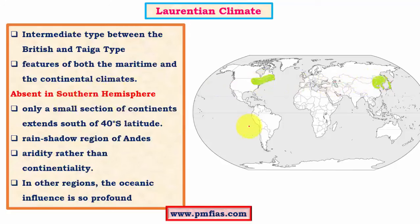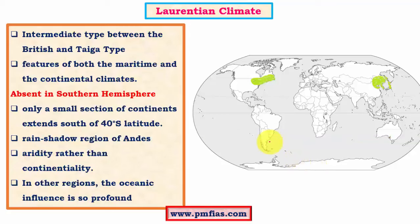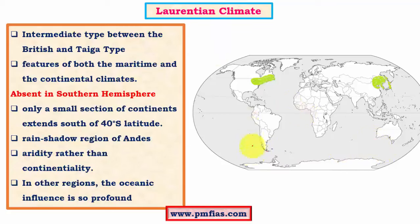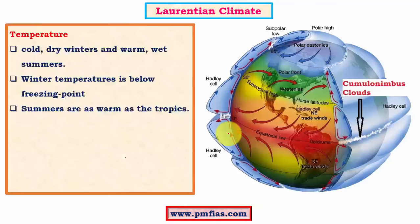The Laurentian type of climate is absent in the southern hemisphere, mainly because of the absence of significant landmass in the temperate region beyond 40 degrees north and south of the equator. The Antarctic falls under polar or tundra climate. In the relevant southern latitudes, the landmass is quite narrow, so it is influenced by the rain shadow effect of the Andes rather than continentality, giving rise to the Patagonian desert. The oceanic influence is also very profound due to the narrow landmass.